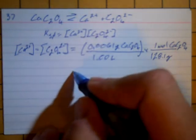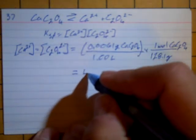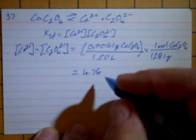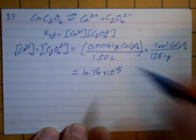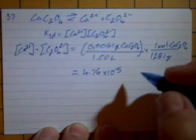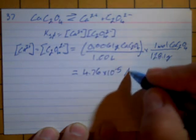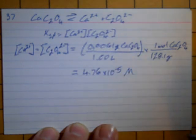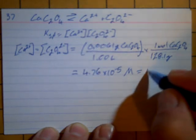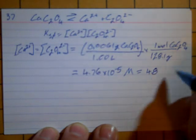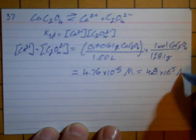So now this whole thing equals 4.76 times 10 to the minus 5. And that's the moles that were in 1 liter. So that is the molarity. And I'd reduce that to 4.8 times 10 to the minus 5.